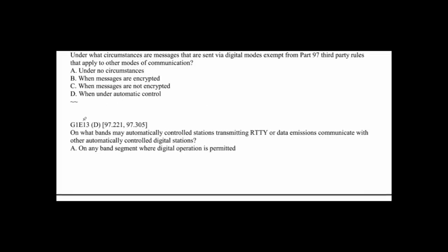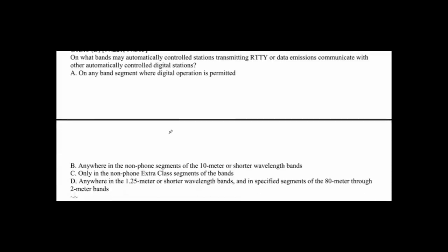G1E13: On what bands may automatically controlled stations transmitting RTTY or digital emissions communicate with other automatically controlled digital stations? The answer is anywhere in the 1.25 meter or shorter wavelength bands, and in specified segments of the 80 through 2 meter bands. So there are some segments where that is permitted.